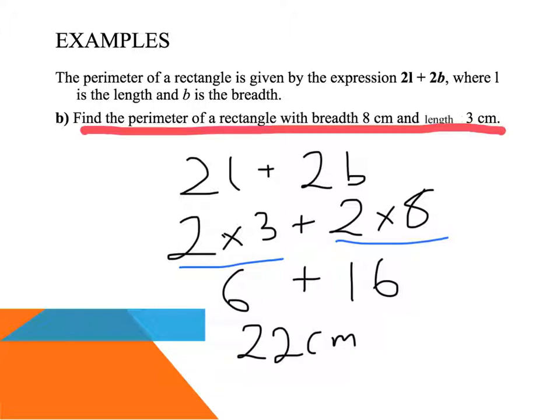Okay, now I have to give my answer as a word problem, so the perimeter is, I'd write it fully, 22 centimeters, making sure I finish it off. Now let's have a look at what else might be required of you.